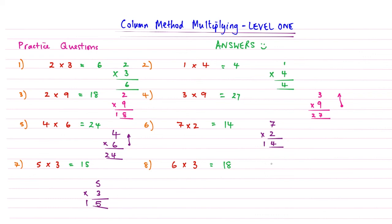Question 8: 6 times 3. Again, this is going to give me a 2-digit answer. 6 times 3 gives me an answer of 18.